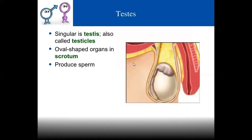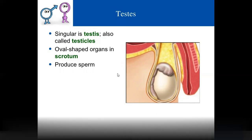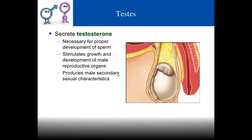Testes (singular: testis; plural: testicles) are housed in a bag-like structure called the scrotum. Sperms are produced inside the testes. Testes also produce testosterone hormone, which is needed for proper development of sperms, growth and development of male reproductive organs, and maintaining male secondary sexual characters.